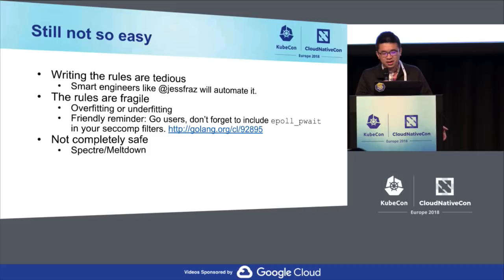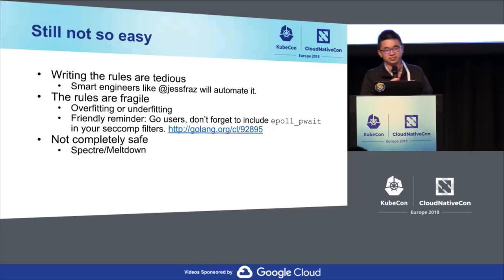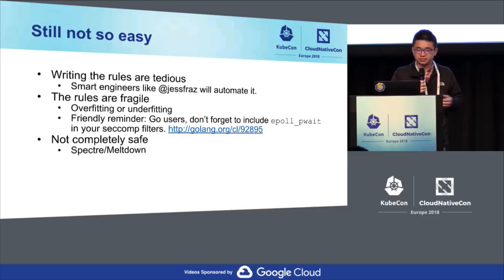As a Go user, you have to include epoll_pwait because it's a recent addition to the Go runtime — ironically because Android only allows this syscall for Go on Android. So it's a problem caused by syscall filtering: you constantly have to fix your seccomp BPF filters. And at the same time, it's not completely safe because you're still subject to Spectre and Meltdown hardware bugs.